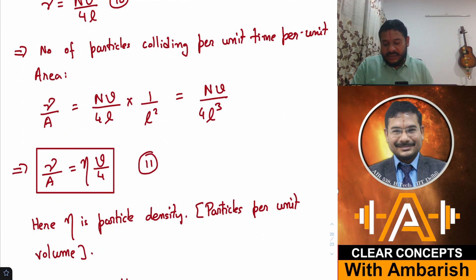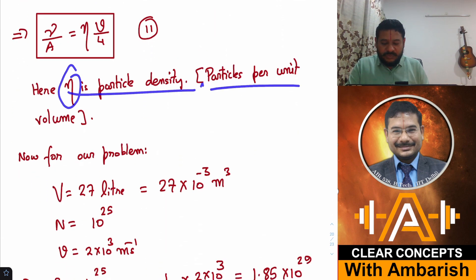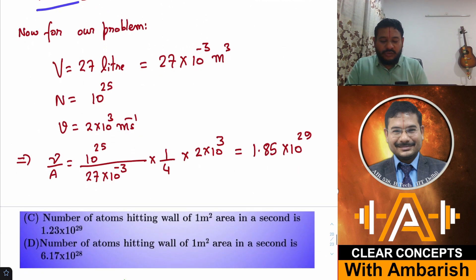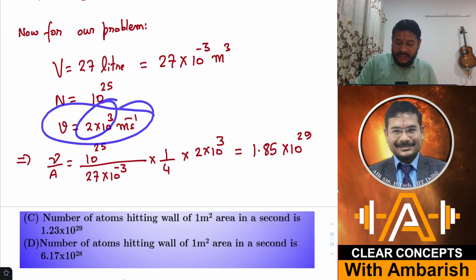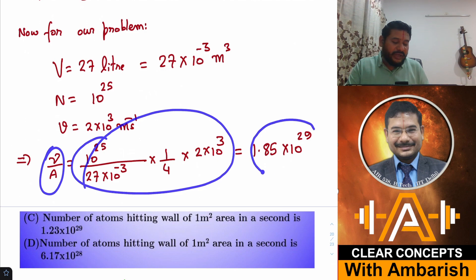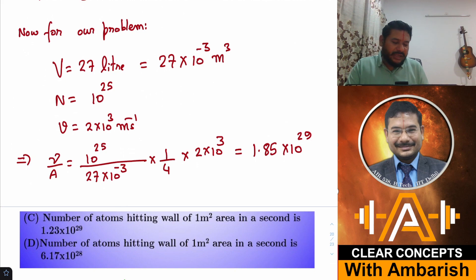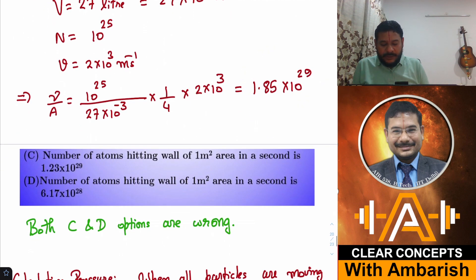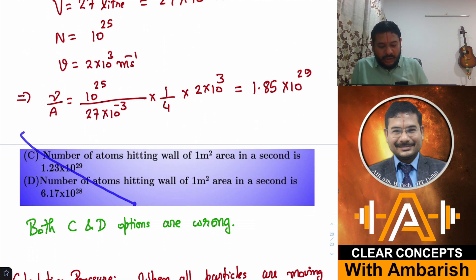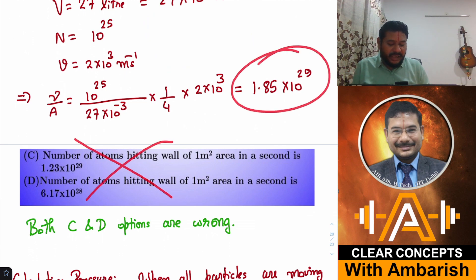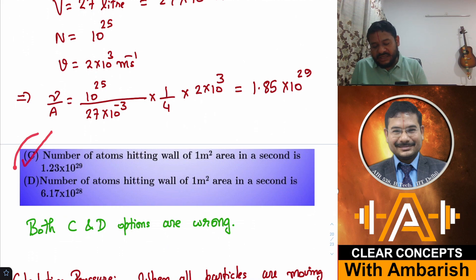Now plugging in the values for this problem: η = N/V = 10²⁵ / (27×10⁻³ m³), speed v = 2000 m/s. Using collisions per unit area = ηv/4, we get 1.85×10²⁹ collisions per second per square meter. Looking at the options: option C gives 1.23×10²⁹ and option D gives 6.17×10²⁰ — both are incorrect. Neither C nor D matches our result.